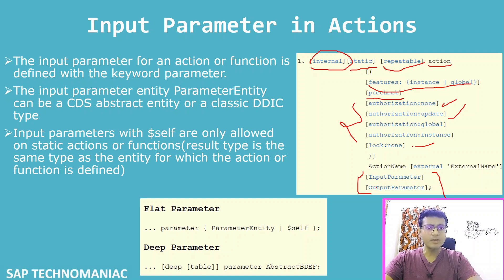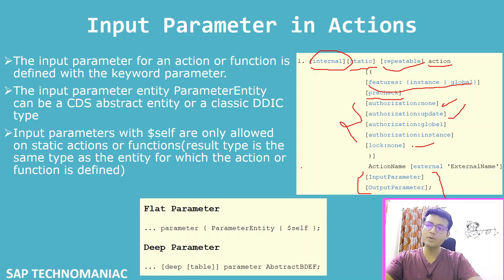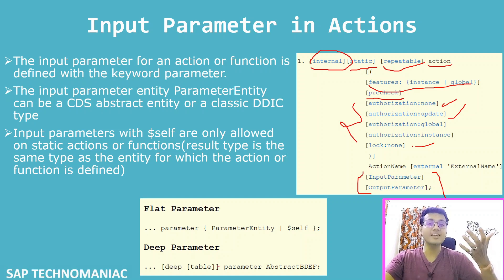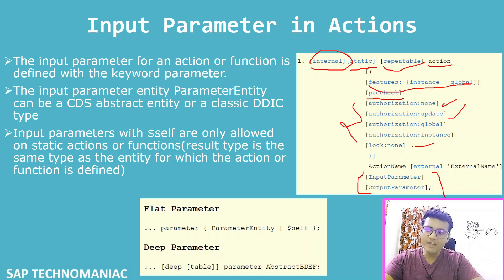There are important things to ensure when defining the input or output parameters of that particular action. The input parameter can be a flat parameter or a deep parameter. A flat parameter is the basic type. The flat parameter can again be of any entity type, abstract entity, any other CDS entity type.